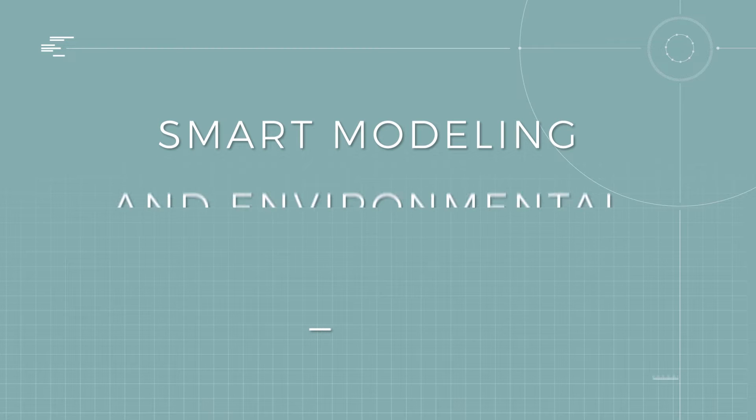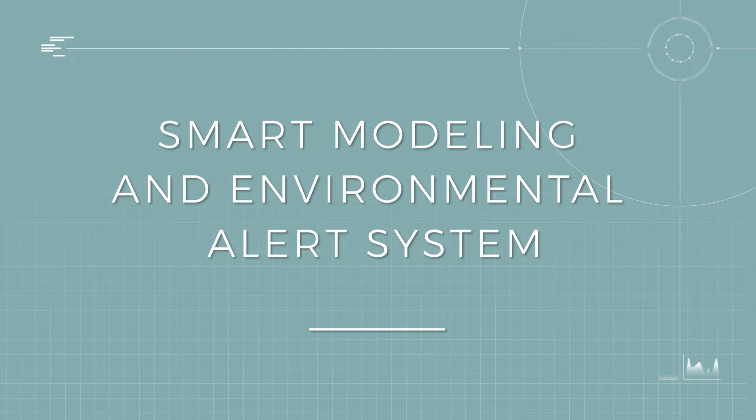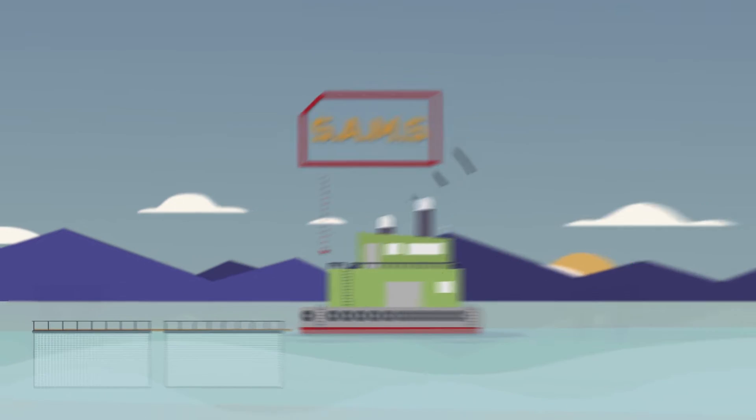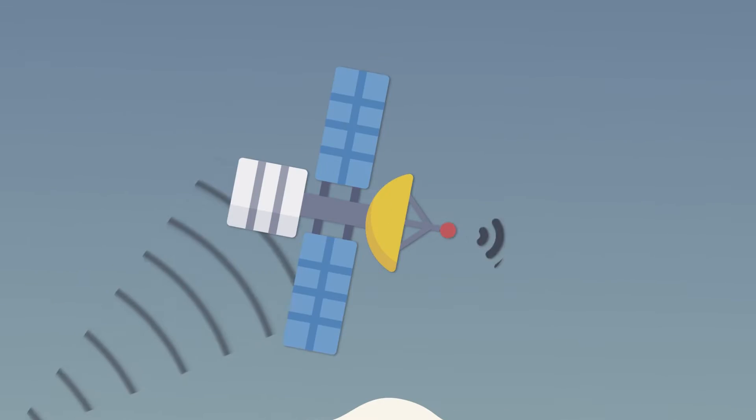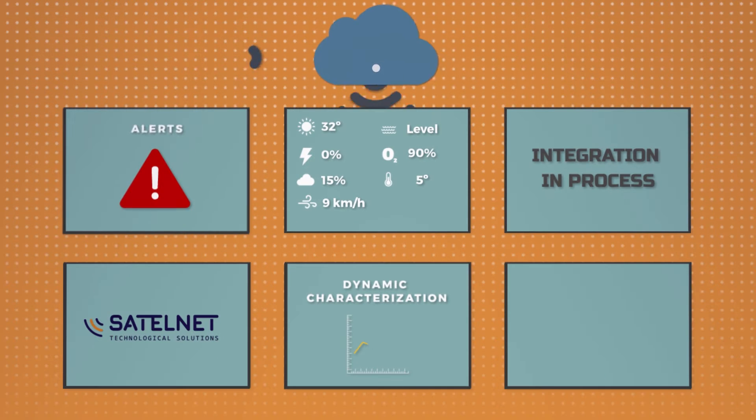SatellNet proposes a smart modeling and environmental alert system that registers, transmits via satellite, integrates and models variables for dynamic characterization.